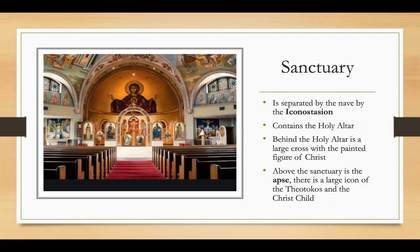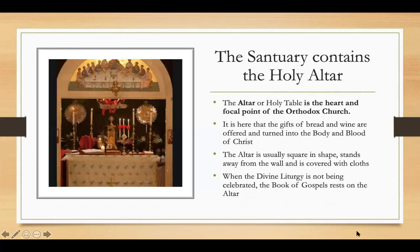Next we have the sanctuary, which is separated from the nave by the iconostacion. The sanctuary contains the holy altar. Behind the holy altar is a large cross painted with the figure of Christ. Above the sanctuary is the apse, where there is a large icon of the Theotokos and the Christ child. The altar, or holy table, is the heart and focal point of the Orthodox Church — it is here that the gifts of bread and wine are offered and turned into the body and blood of Christ.